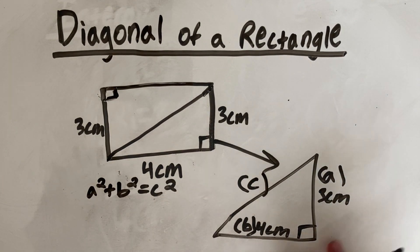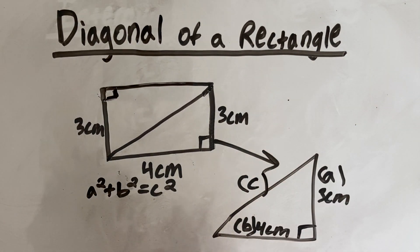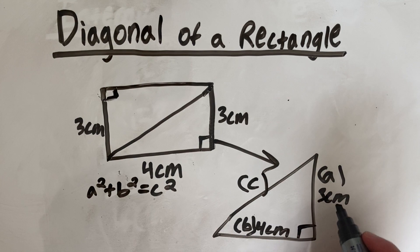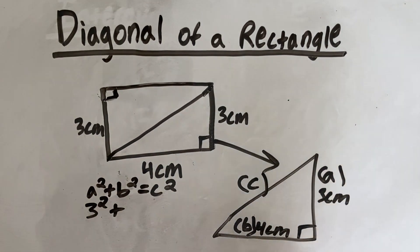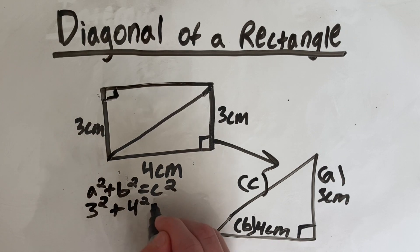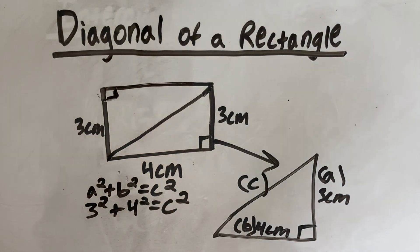In other words, your two smaller sides squared added together will equal your longer side squared. So if we substitute these values into this equation, we have A, which is 3, squared plus B, which is 4, squared, which is equal to C squared.